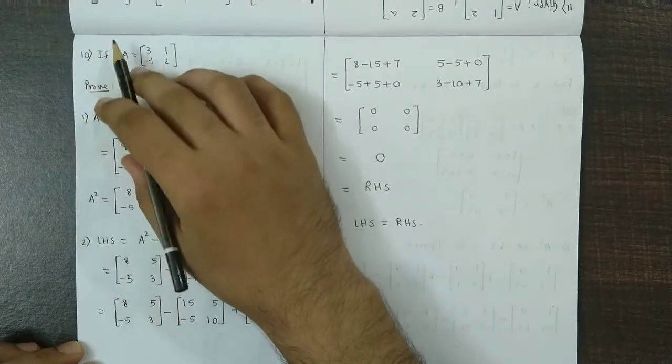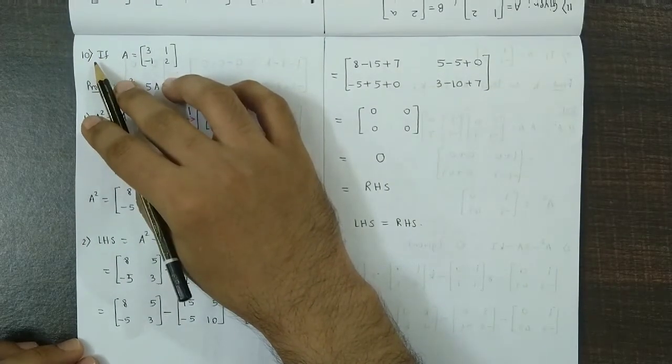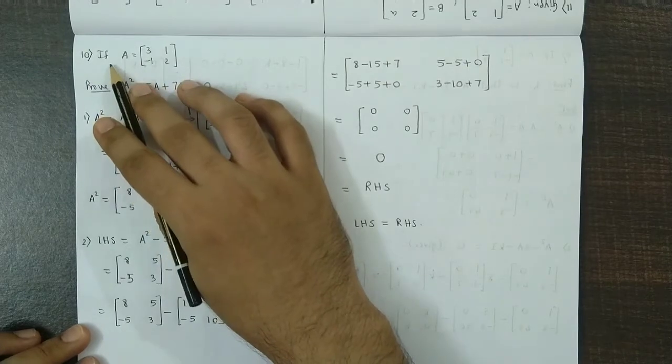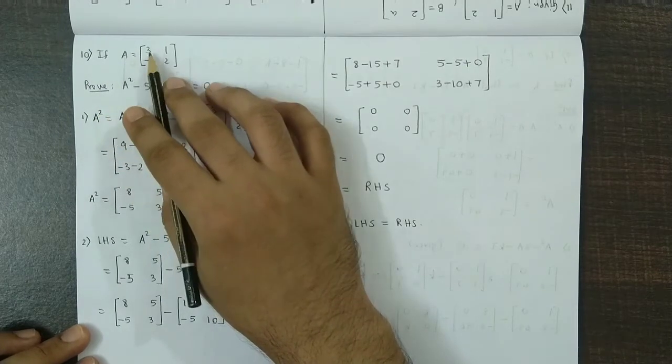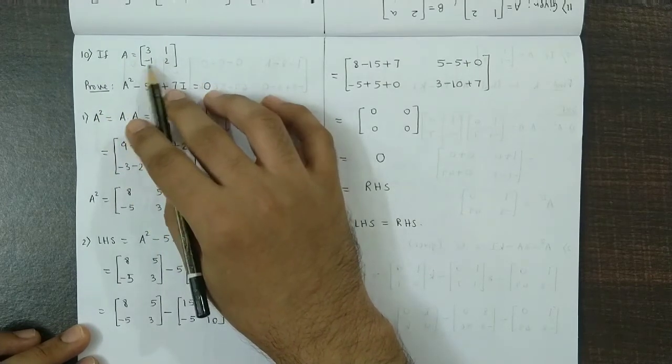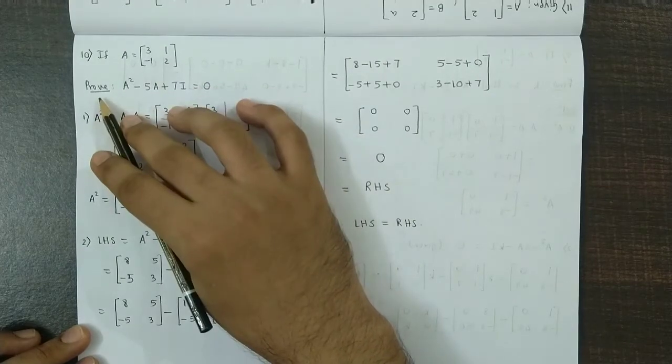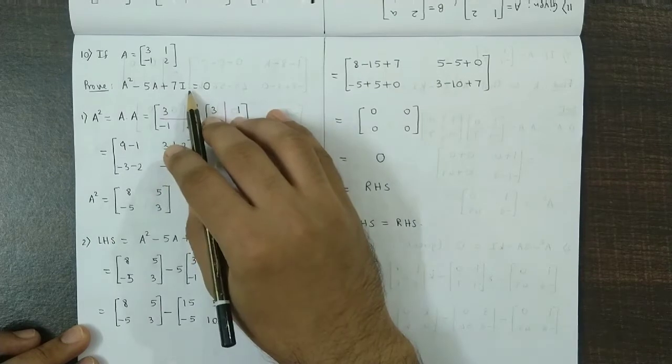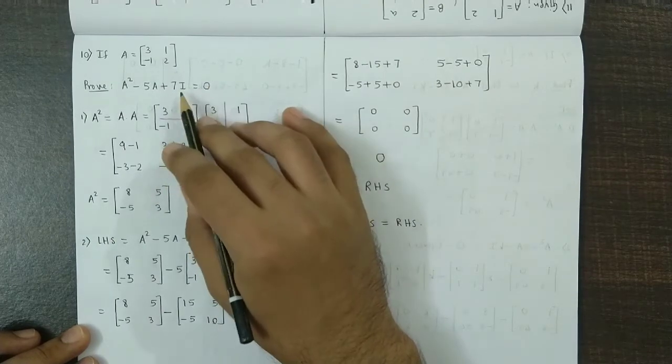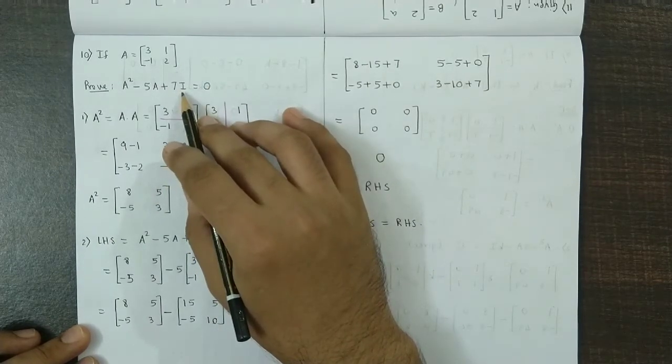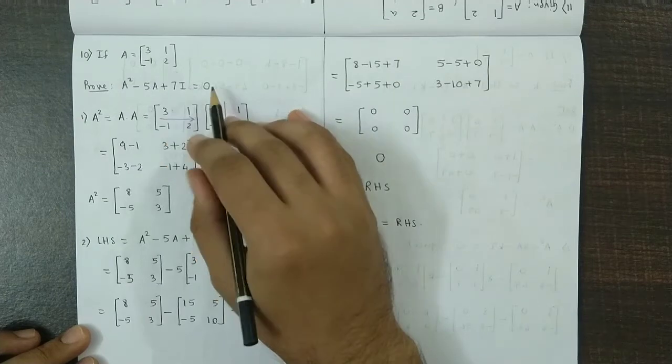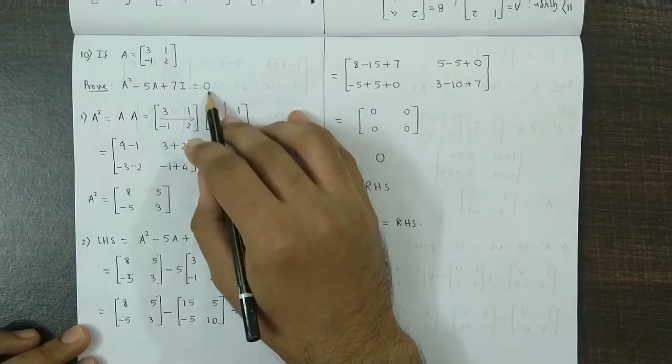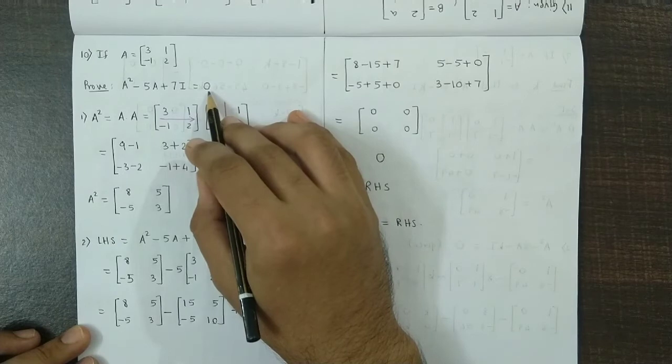We now discuss question number 10 from exercise 2.3. We have been given matrix A with elements 3, 1, minus 1, 2 and we have to prove that A square minus 5A plus 7I is a zero matrix. Here I is the identity matrix of second order and O is the zero matrix or the null matrix.